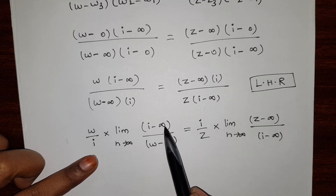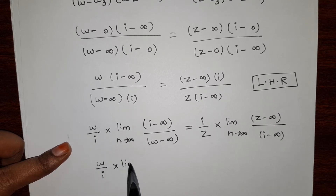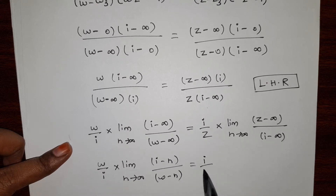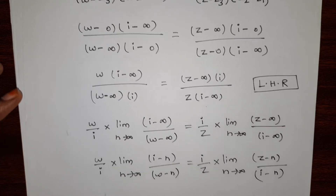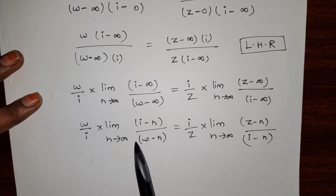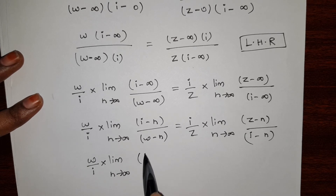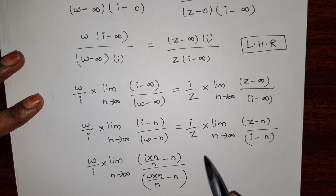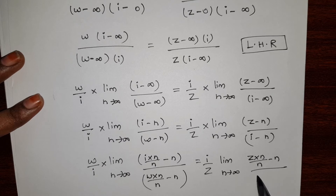In place of infinity, we replace with n, so it becomes the limit as n tends to infinity of (i minus n) divided by (w minus n). Then, i by z times the limit as n tends to infinity of (z minus n) divided by (i minus n). Then take n commonly outside. Since in z there is no n, we multiply and divide the term by n to get the n term.